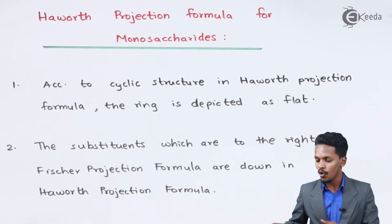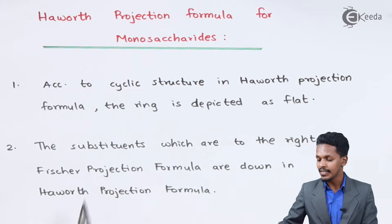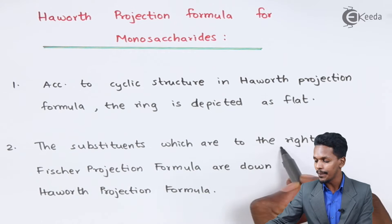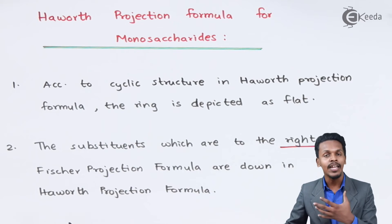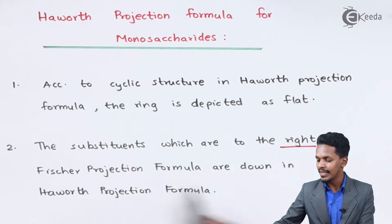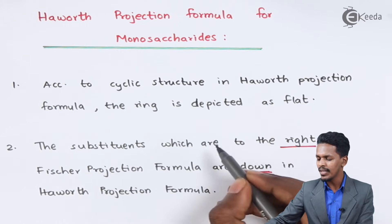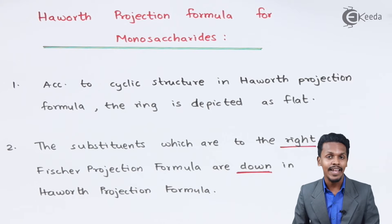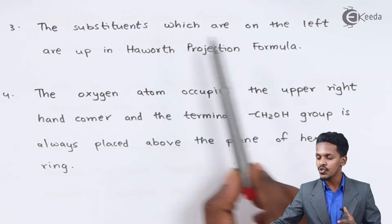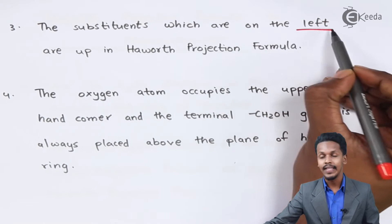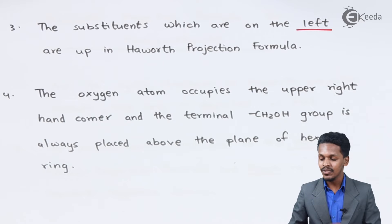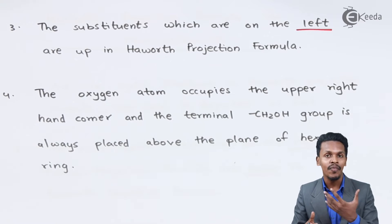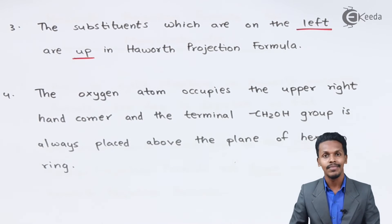The second rule is that the substituents which are to the right in the Fischer projection formula are placed down in the Haworth projection formula. This is the most important point. The substituents which are on the left in the Fischer projection formula are written up in the Haworth projection formula.